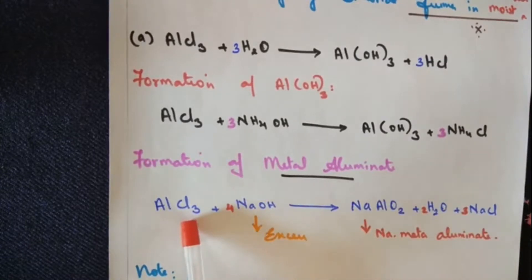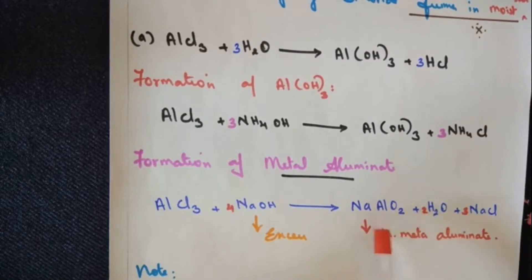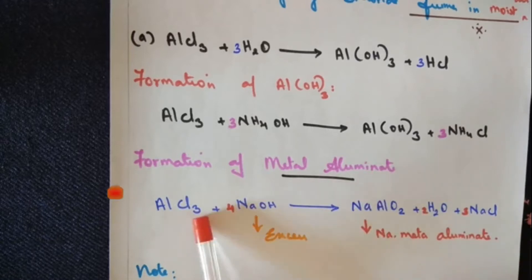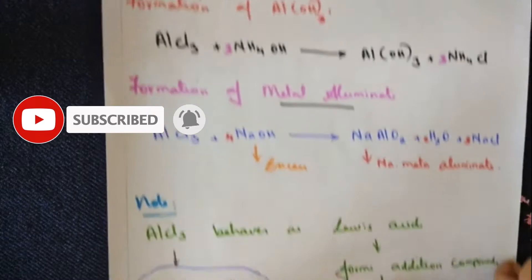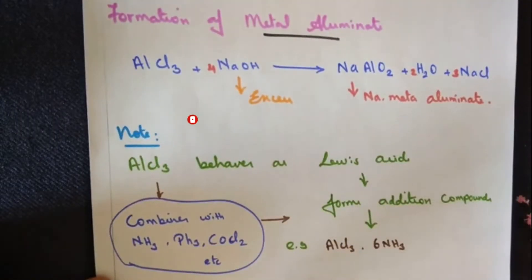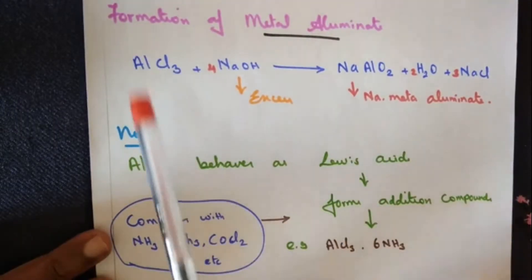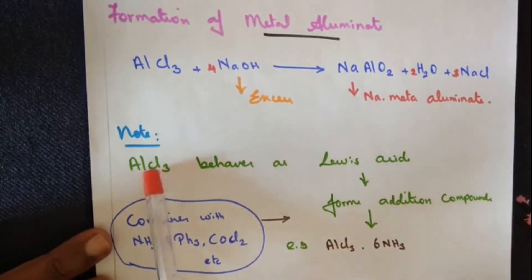Aluminium chloride we treat with excess sodium hydroxide. One more note in terms of one mark point of view you need to remember: